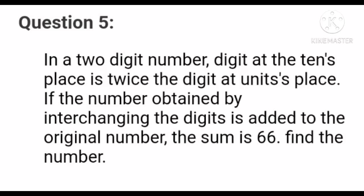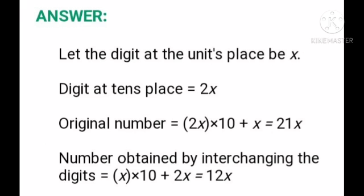Question number 5: If a two-digit number has the digit at the tens place twice the digit at the unit place, and if the number obtained by interchanging the digits is added to the original number the sum is 66, find the number. Let the digit at the unit place be x. Digit at tens place is equal to 2x. Original number is equal to 2x into 10 plus x.